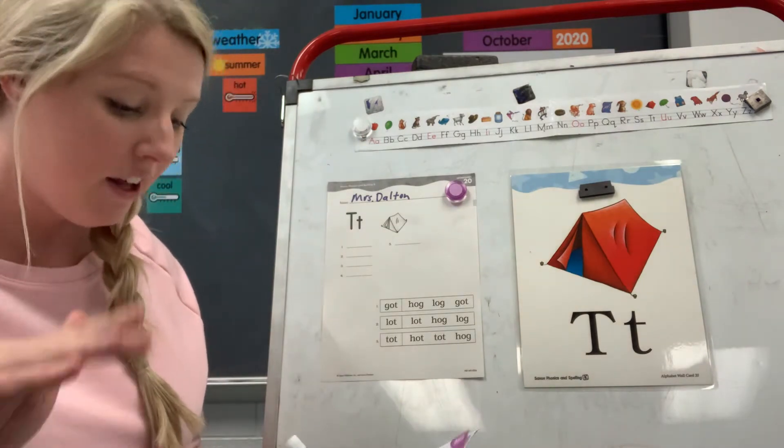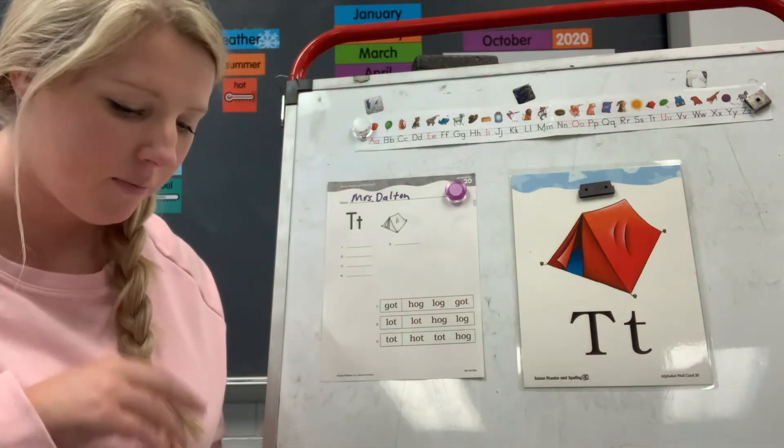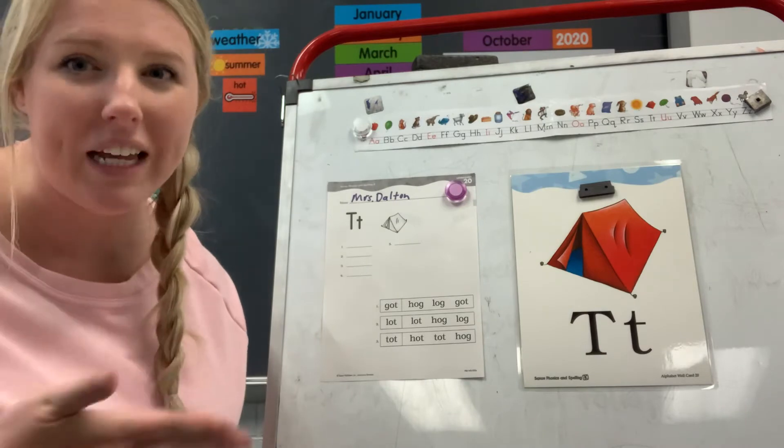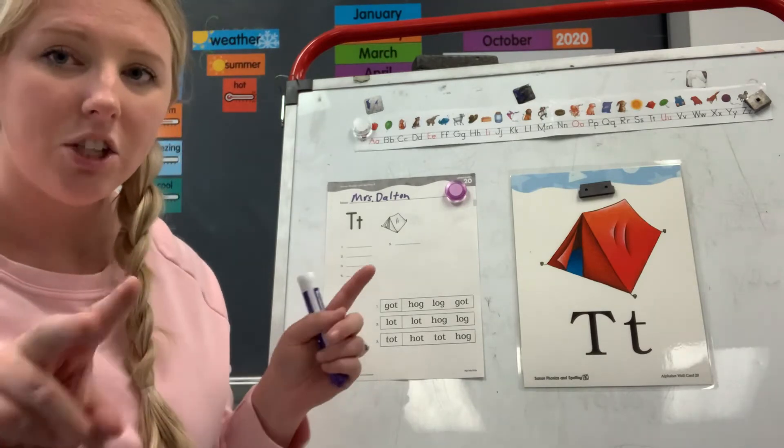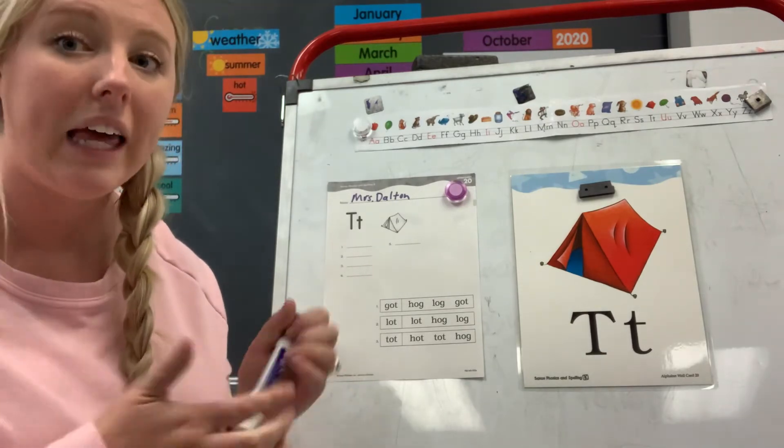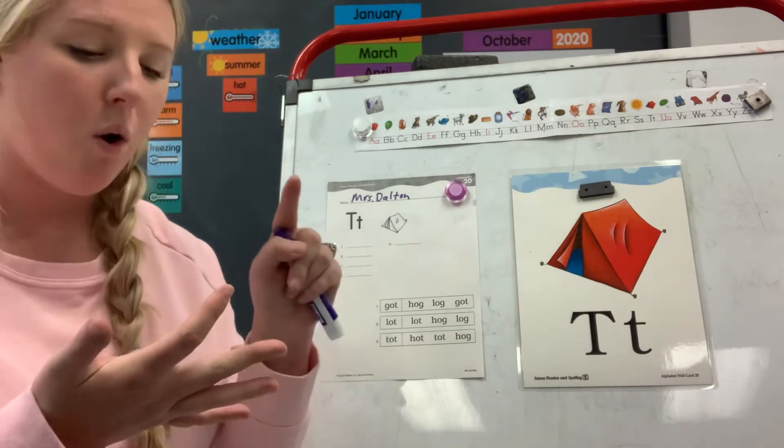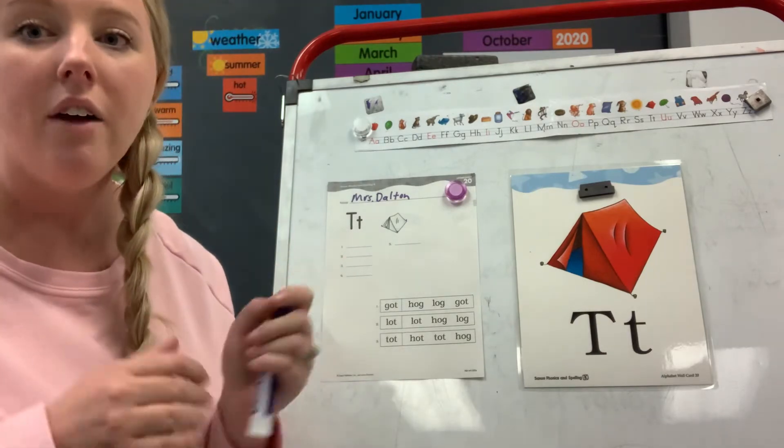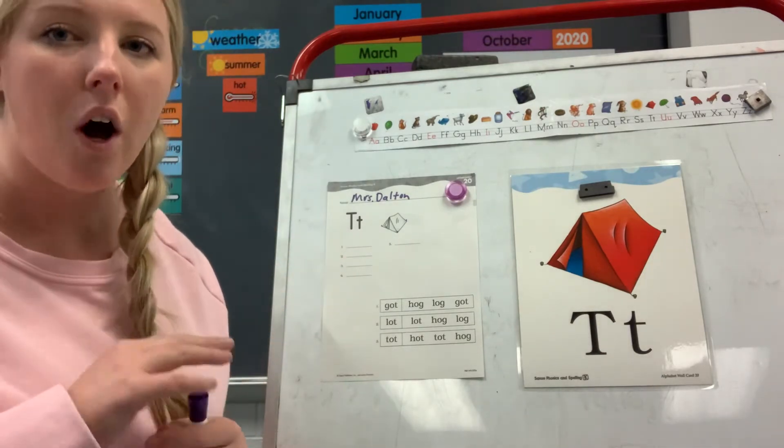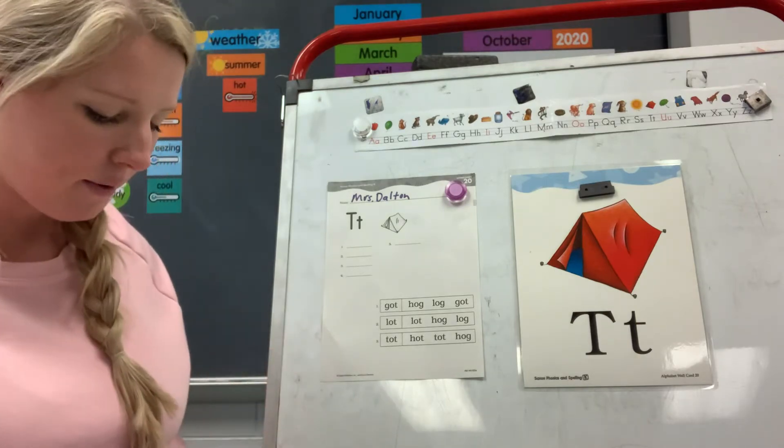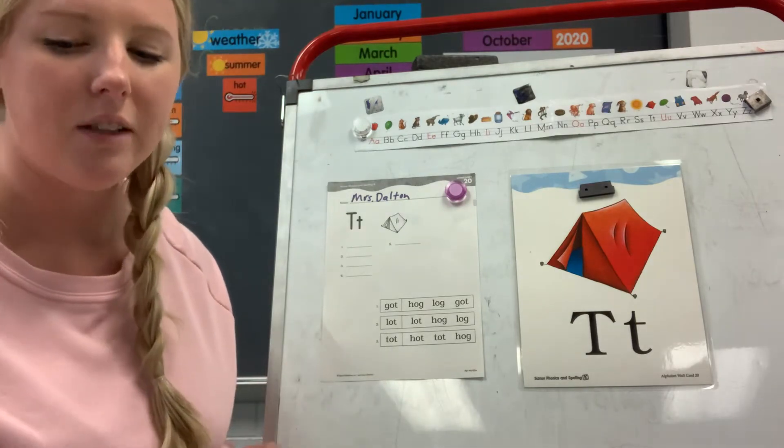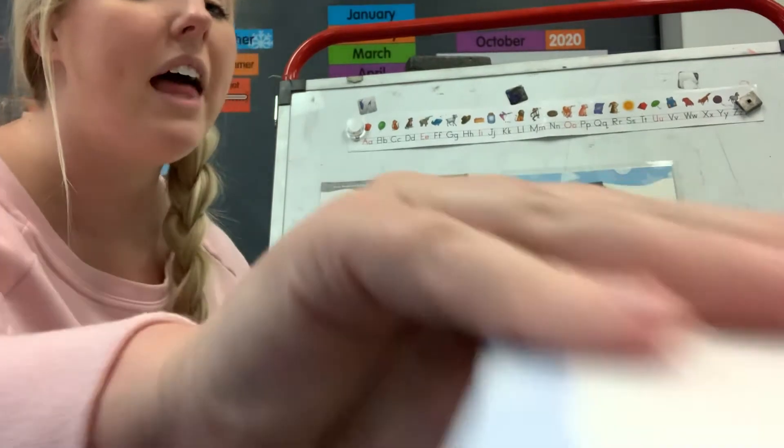ones we just did, those are called blends. Okay, and we're going to learn more about blends as we go. But when you hear two consonants that are put together like GL or BL or CL, those are called blends. Two consonants that are put side by side, okay. We'll keep working on those as we go. Let's do some quick letter review.